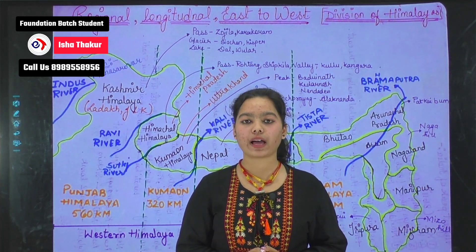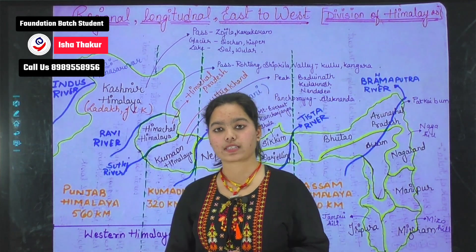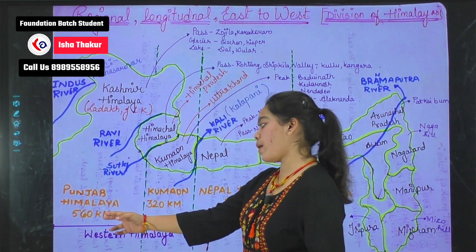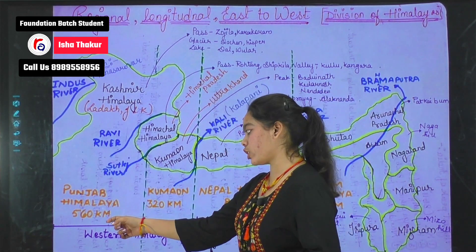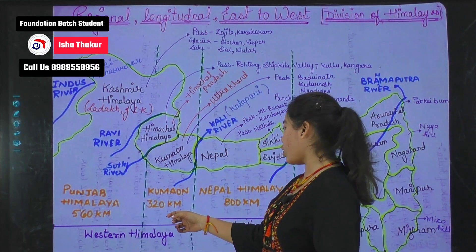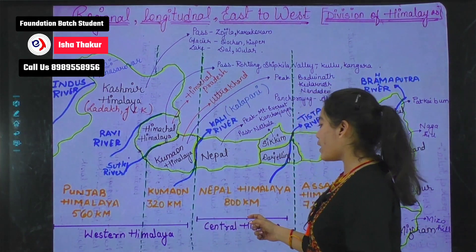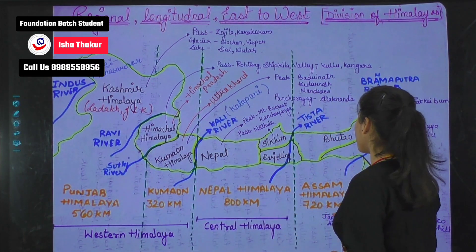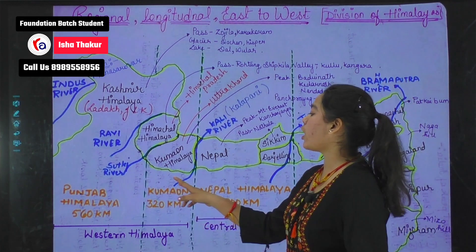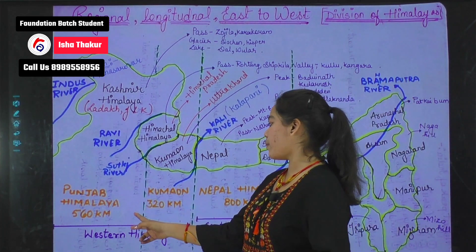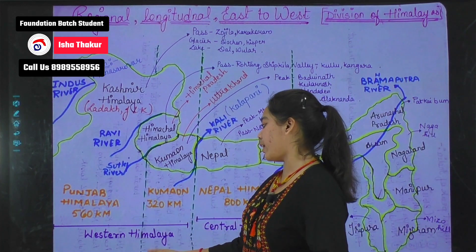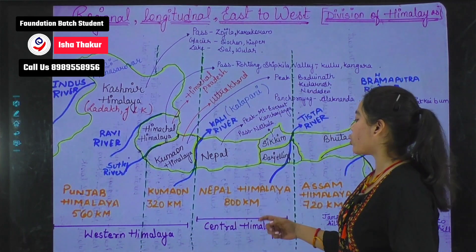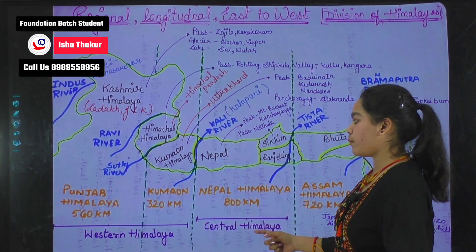Regional Himalayas are also divided into four parts: Punjab Himalaya (560 km), Kumayun Himalaya (320 km), Nepal Himalaya (800 km), and Assam Himalaya (720 km). Punjab Himalaya and Kumayun Himalaya together are known as Western Himalaya. Nepal Himalaya is also known as Central Himalaya.